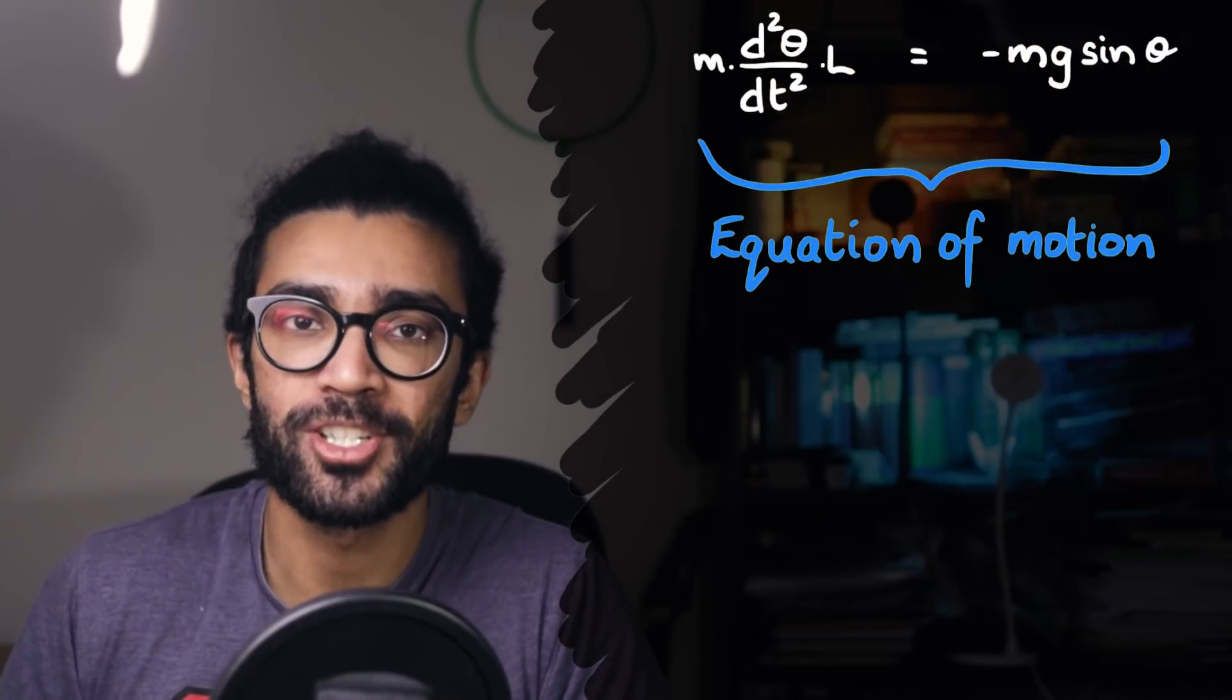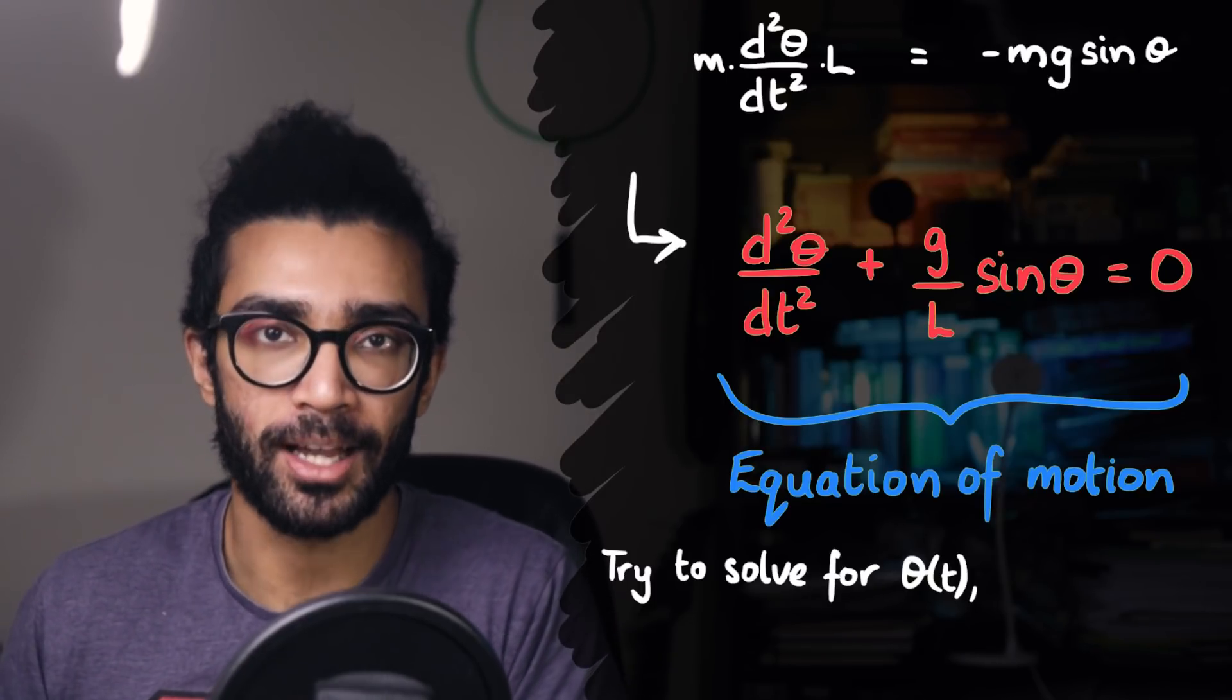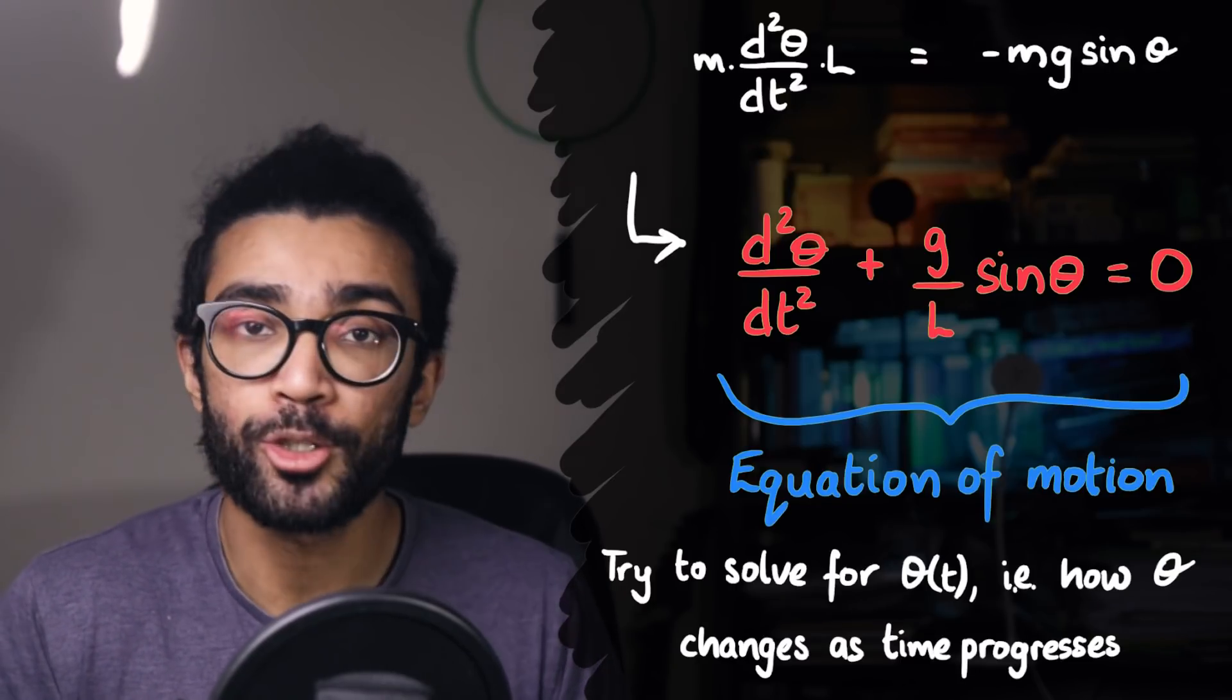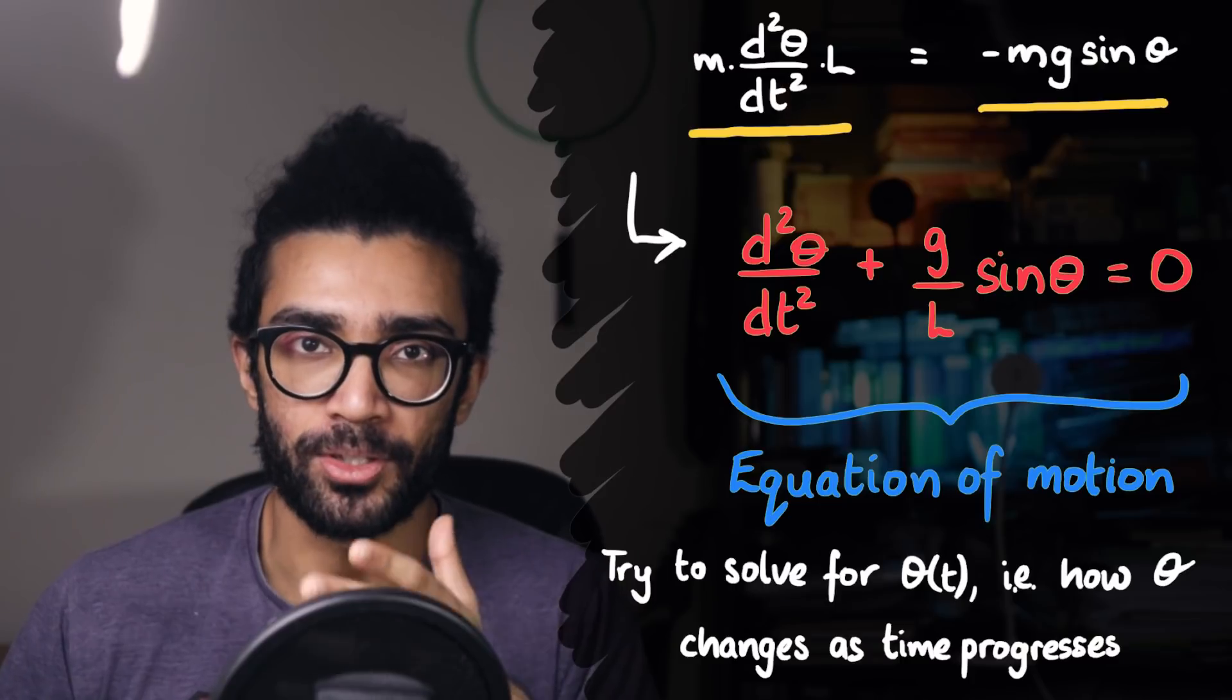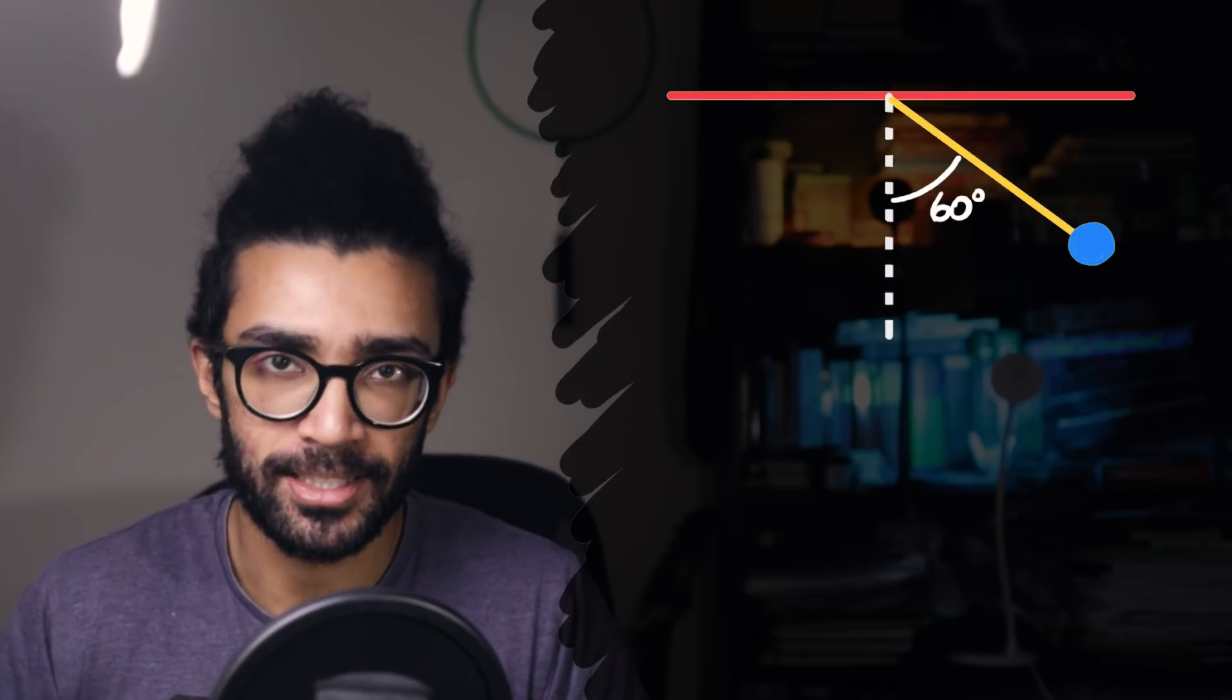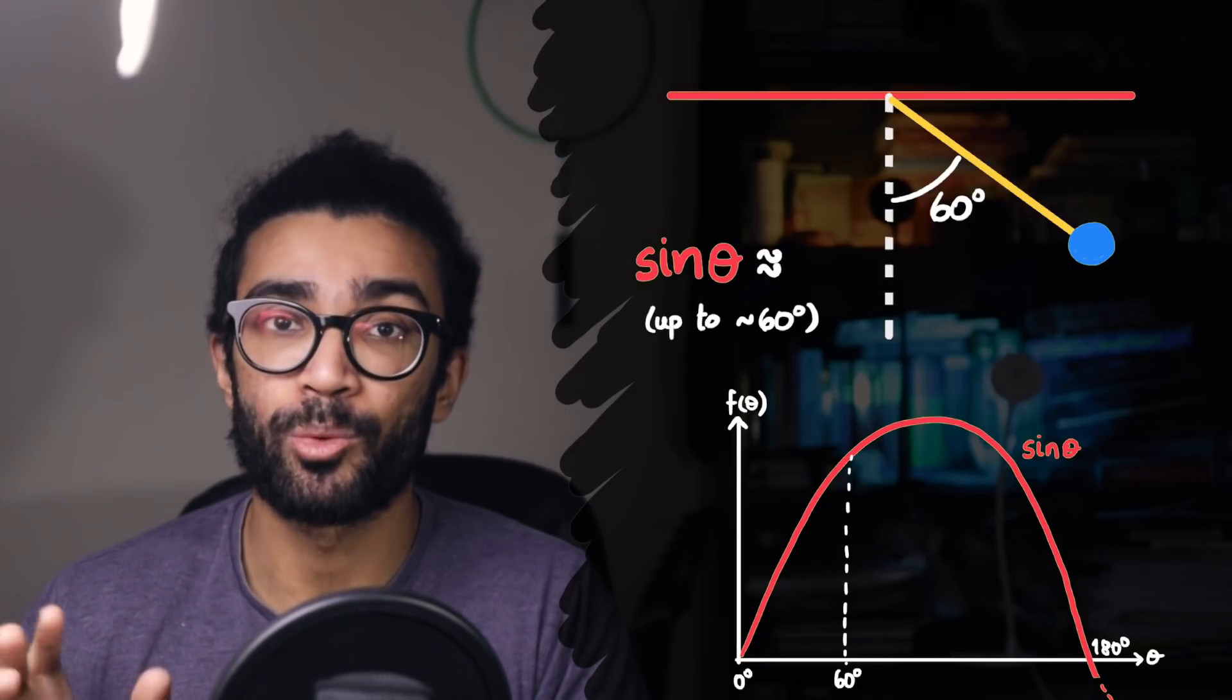Now, what we've got here is an equation of motion for our pendulum. We can try and solve it, which basically means we want to find theta as a function of the time t. In other words, we want to find how theta changes over time, assuming the net force on our pendulum is simply the theta component of the gravitational force. This equation, unfortunately, is a little bit difficult to solve, but we can make our life a little bit easier if we only consider the pendulum swinging to up to around 60 degrees. The reason we can do this is because for up to about 60 degrees, the sine theta part of our equation can simply be replaced with theta.